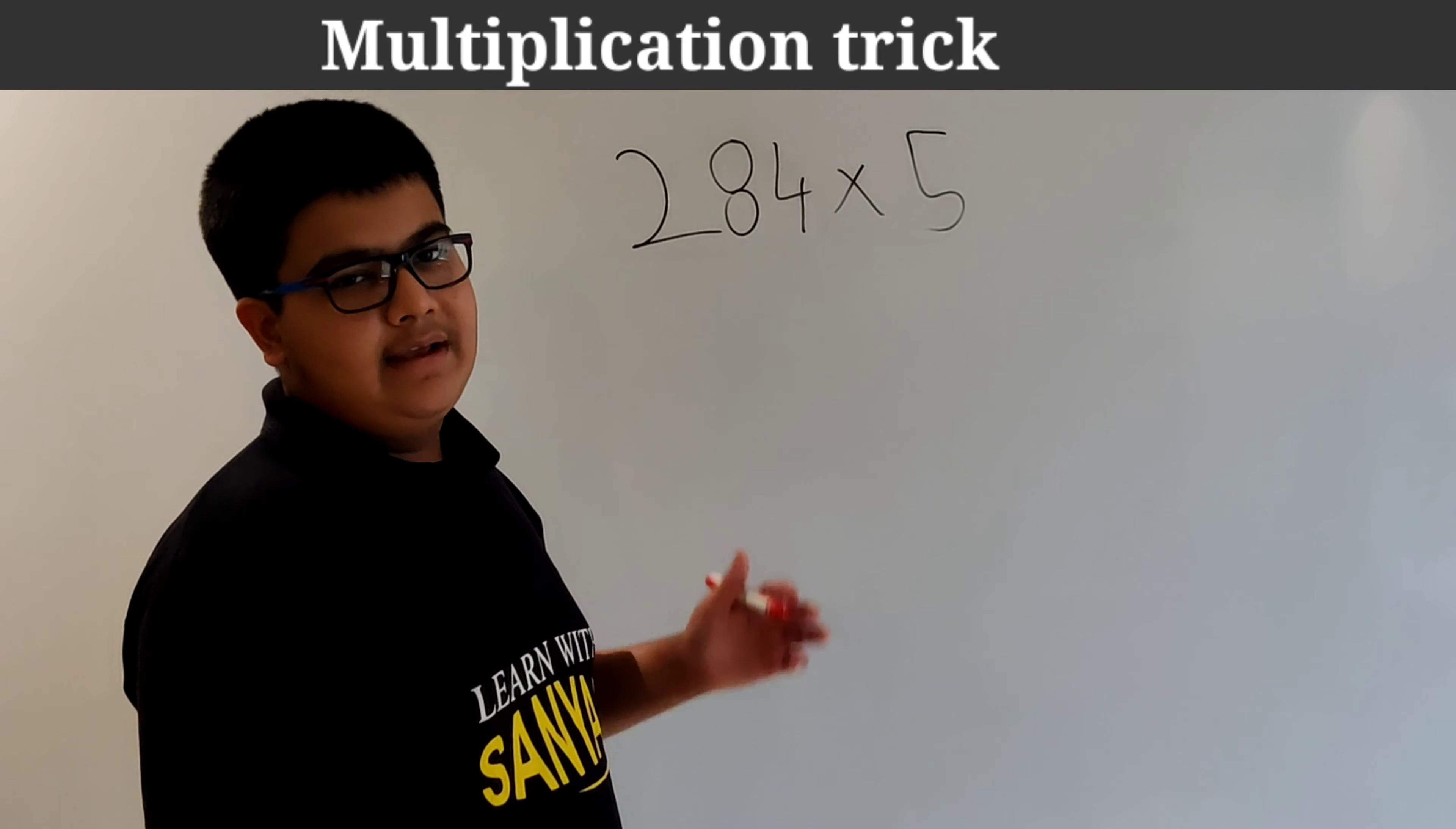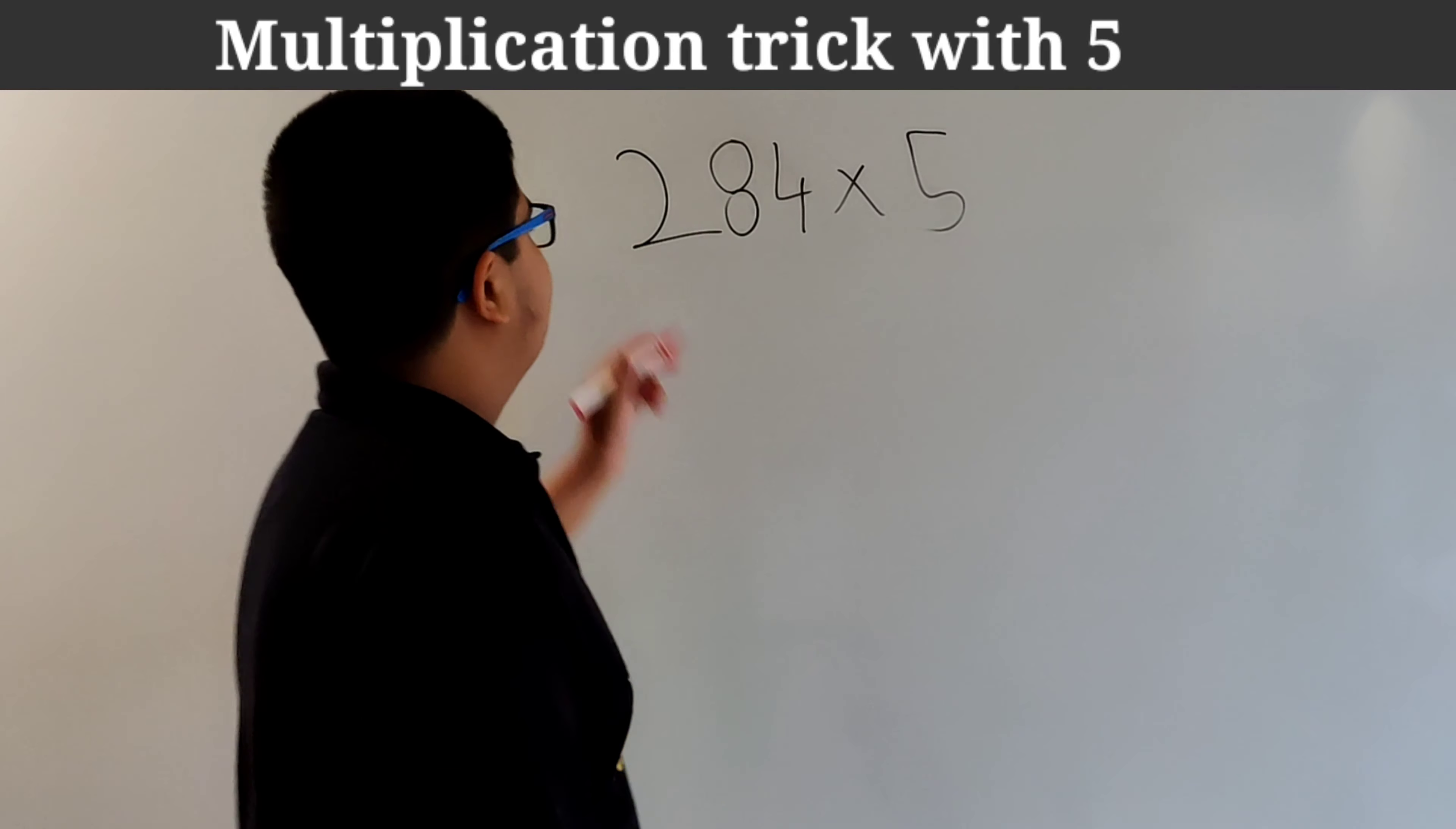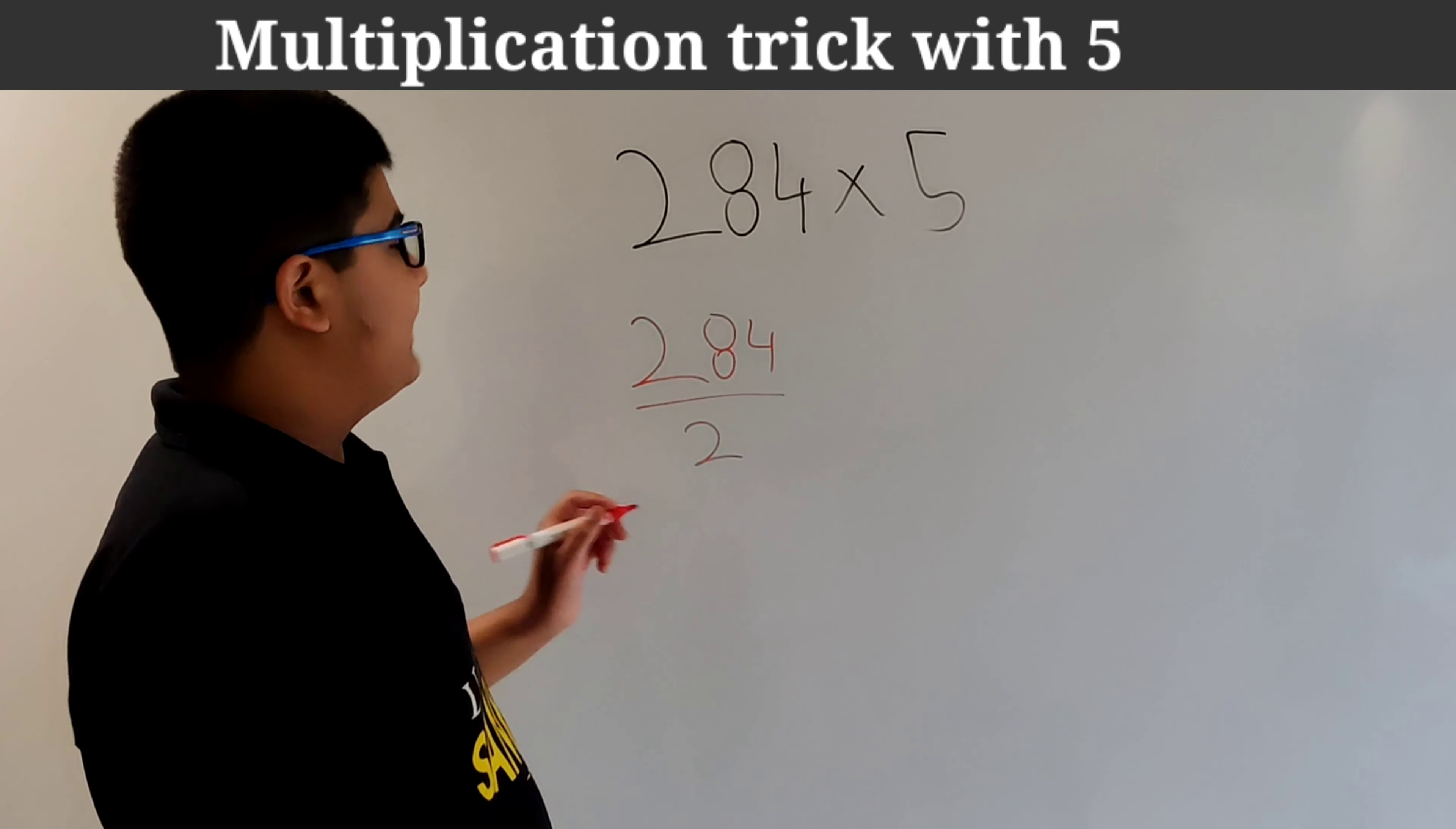So let's consider that we have a number 284 and we have to multiply it by 5 only. So how we will do that? This process has just two simple steps. Step 1, divide the number by 2. So instead of multiplying a number by 5, we can divide it by 2.